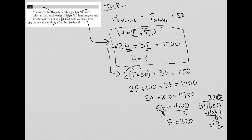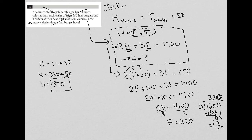So we know that there are 320 calories in french fries. But the question wants us to find H. H — we know that H is equal to F plus 50. So if we know that F is 320, then H is equal to 320 plus 50. And therefore, H is equal to 370. And that is our final answer: 370.